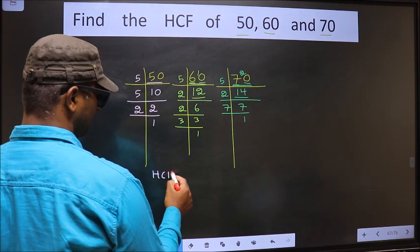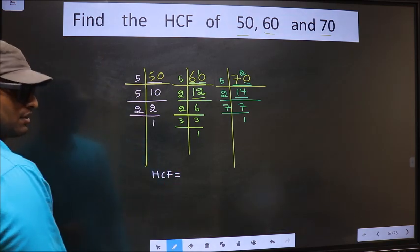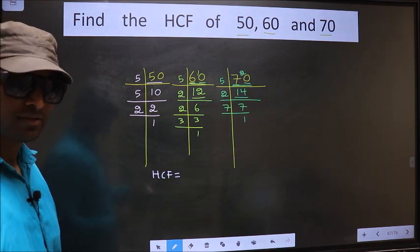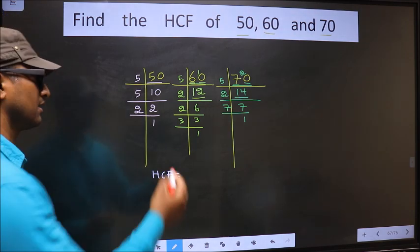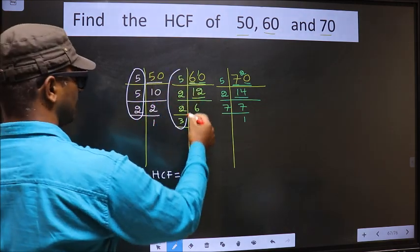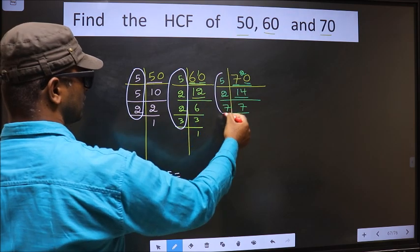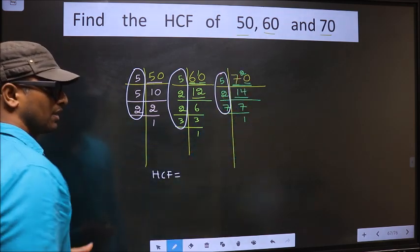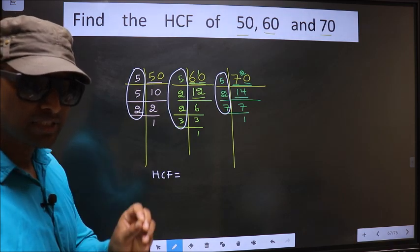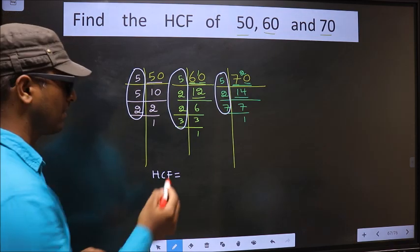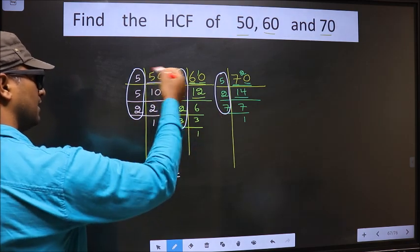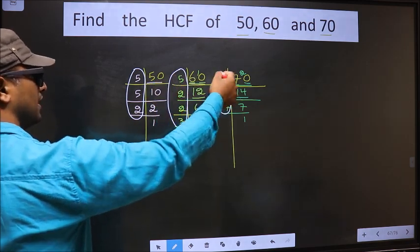So now our HCF is... HCF is the product of numbers which should be present over here and here and also here. I repeat, HCF is the product of numbers which should be present in all the 3 places, here, here and also here.